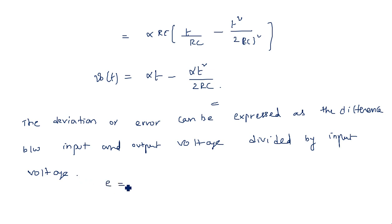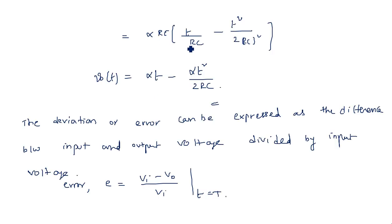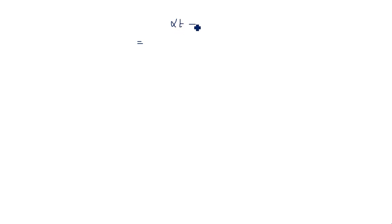The error E is defined as E = (V_in − V_out) / V_in, evaluated at t = T, after completing one cycle. The input voltage for the ramp signal is αT, and the output V_out from the earlier calculation is αT · (1 − T/(2RC)).